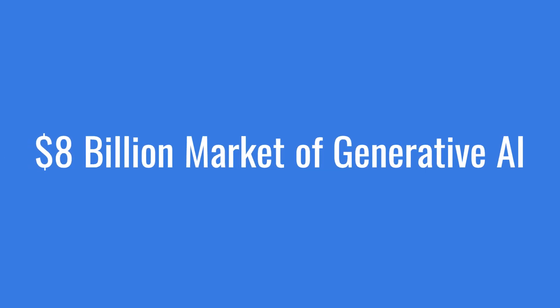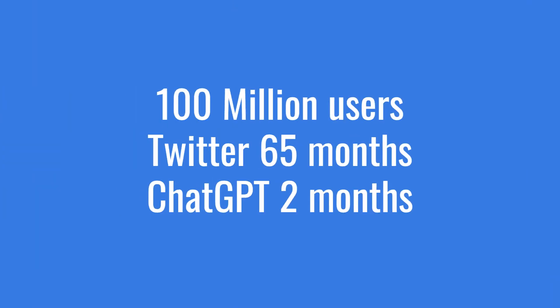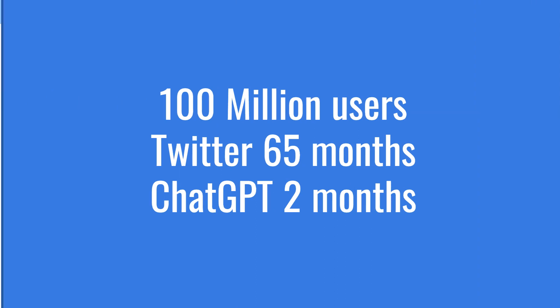Just to give you some numbers: currently the market for generative AI is about $8 billion. For Twitter, it took 65 months to reach 100 million users, whereas for ChatGPT it took just two months. This exponential growth poses risks in terms of the individual, society, and also the environment.